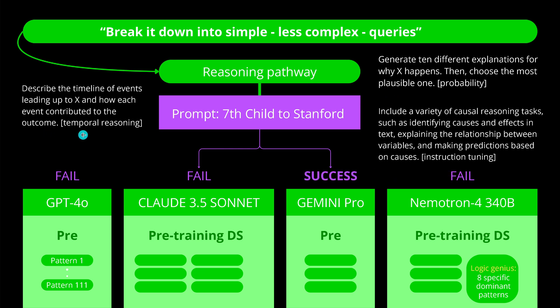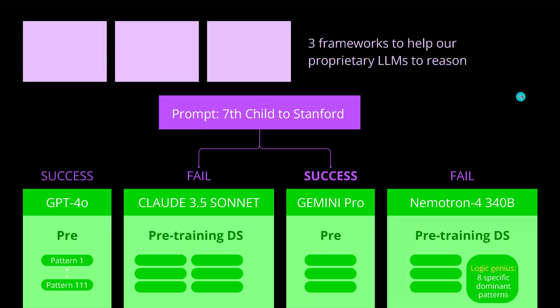The third idea was about temporal reasoning — describe the timeline of events leading up to a particular solution, show how each event contributes to the outcome, go step by step in a linear temporal sequence, maybe have some feedback, some self-reflection, maybe self-criticism. And I have to become better at explaining what I do and why I've chosen particular things in my videos.